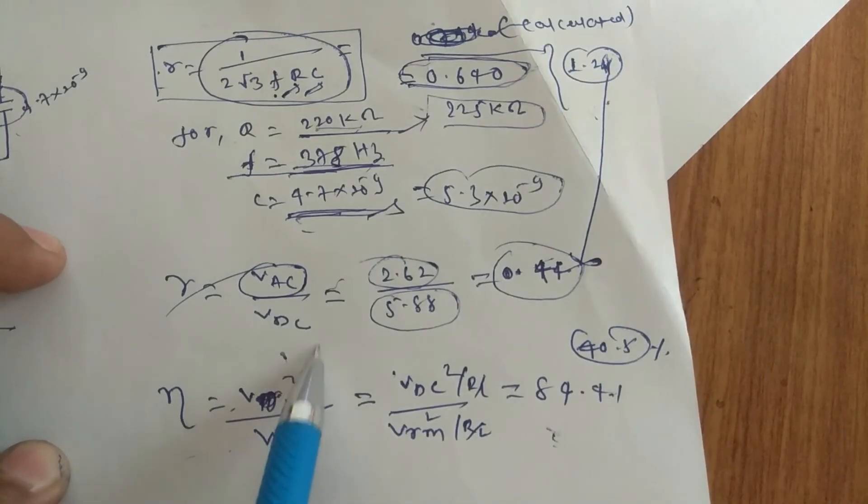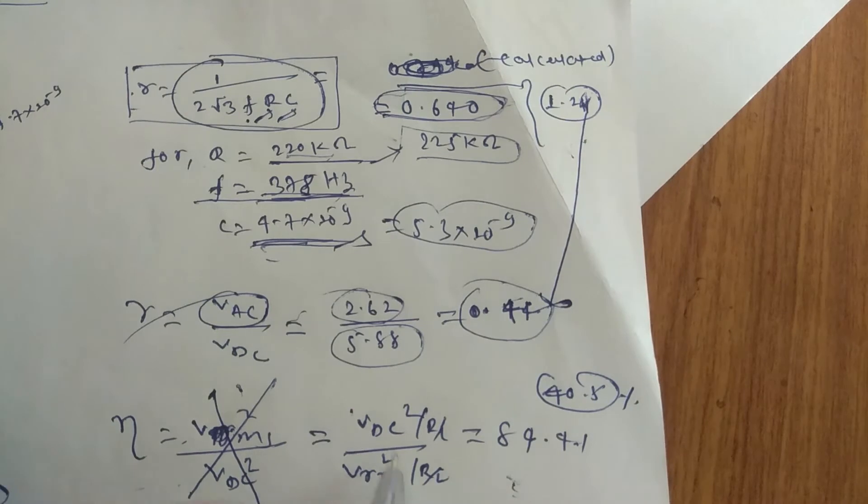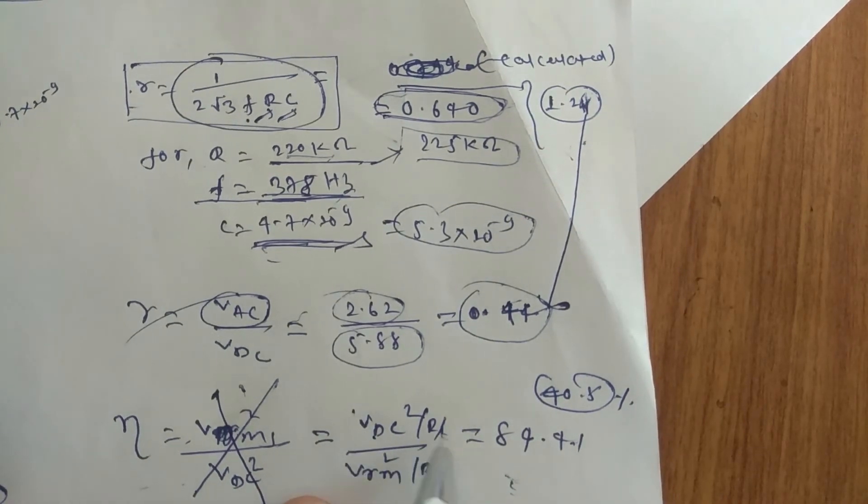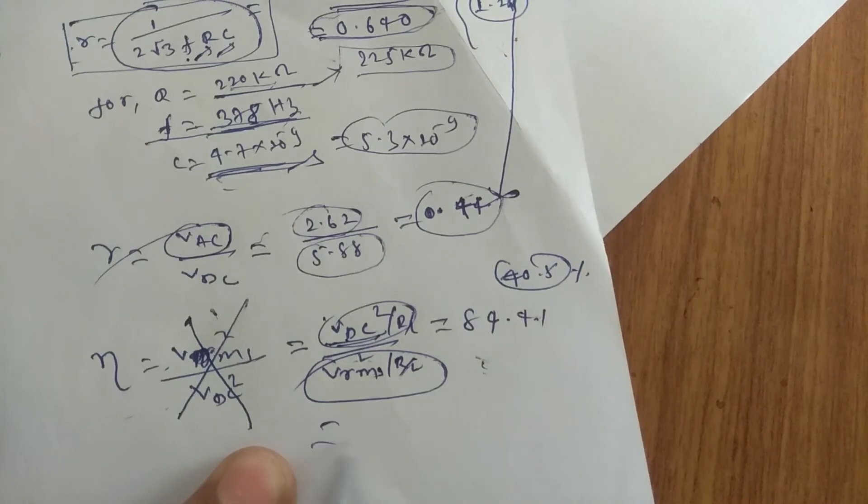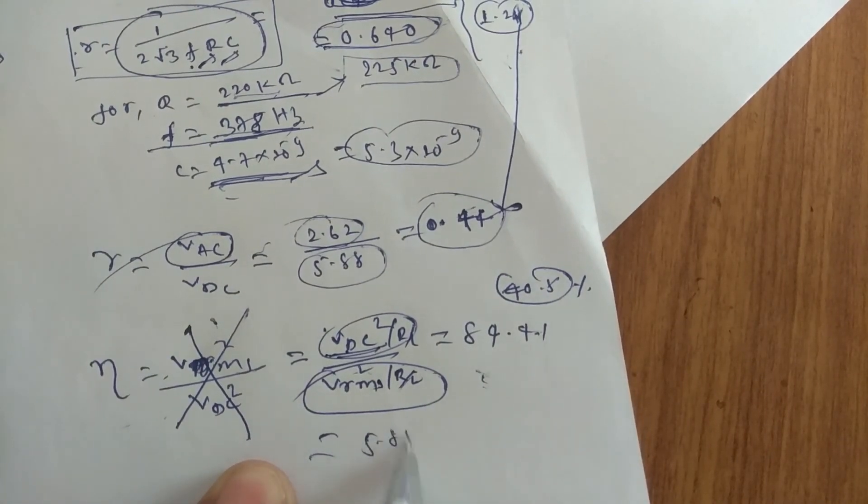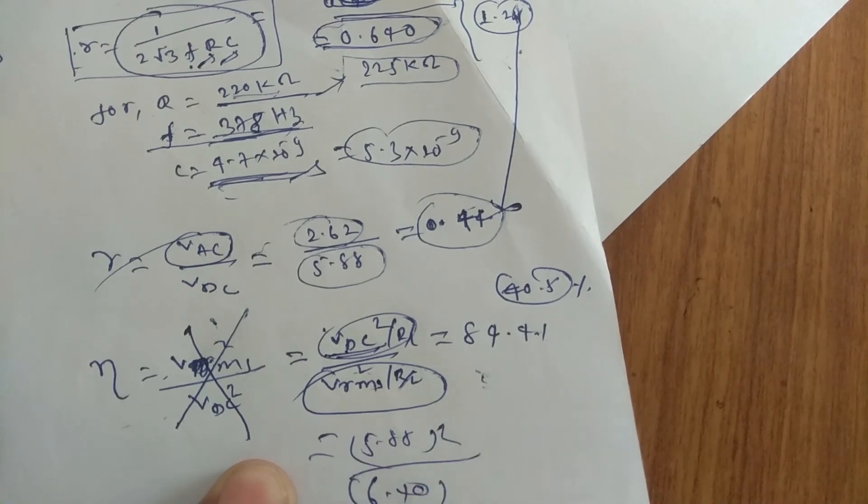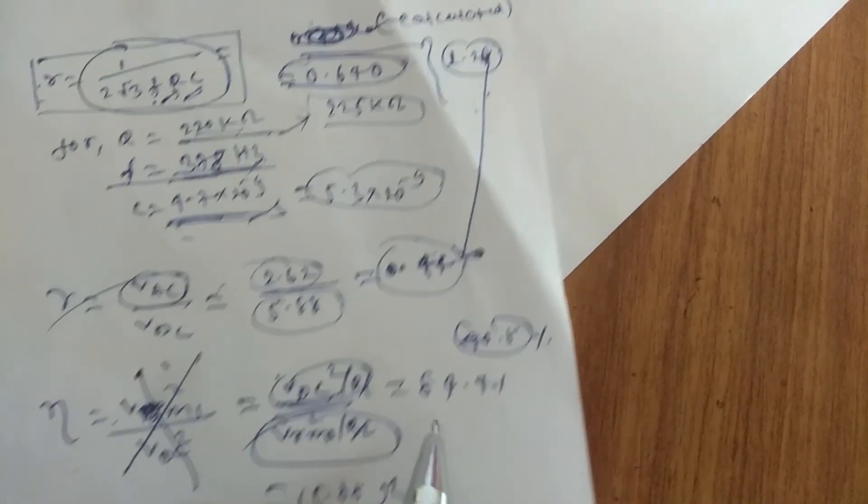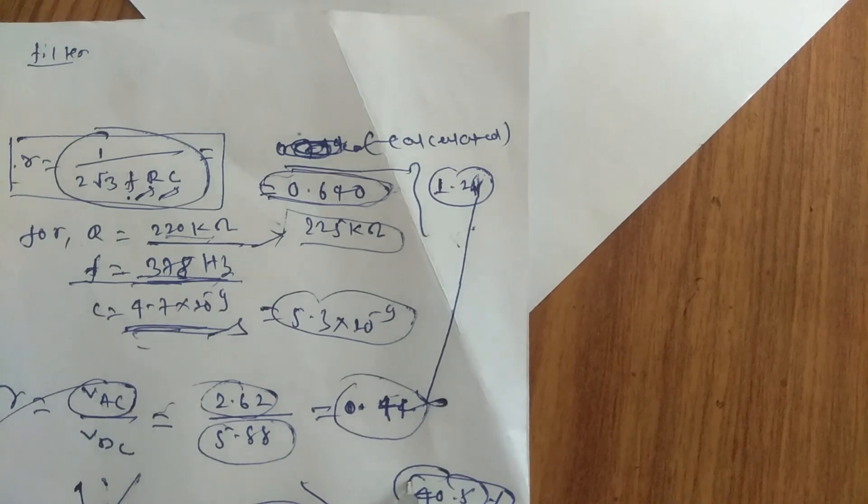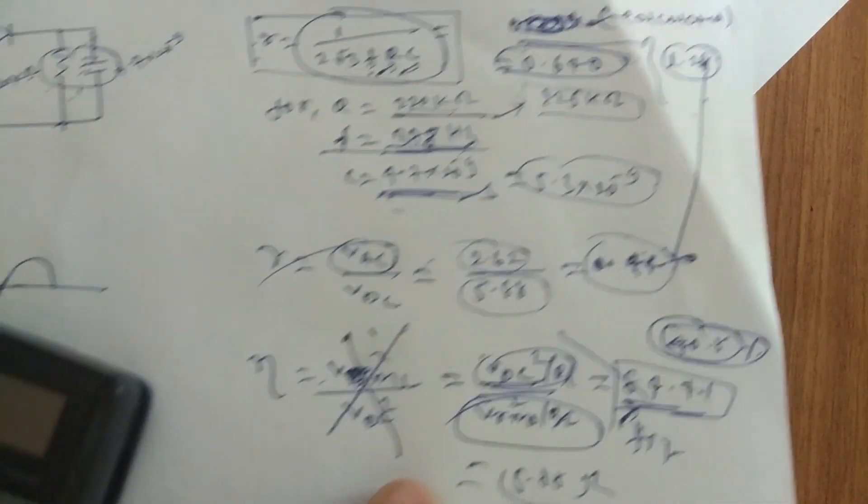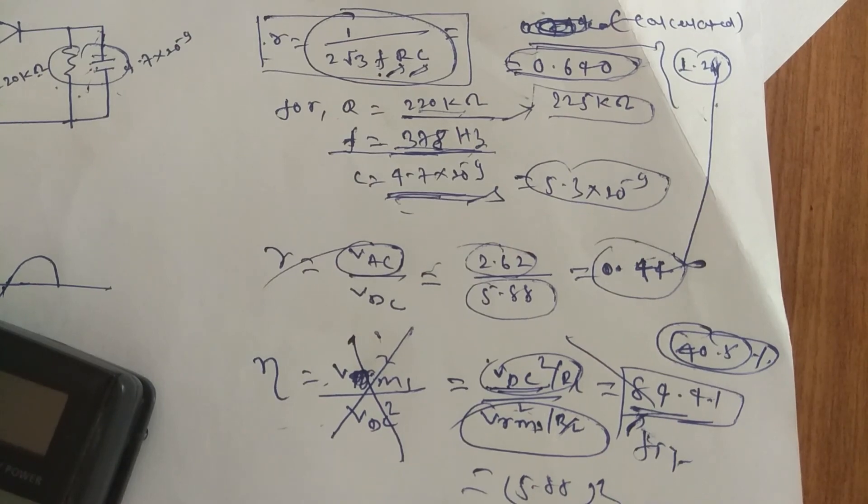If you change the formula that I have written, it was wrong. Vrms by VDC square, it will be VDC that we wanted because of rectification. And what we are getting? Vrms by RL, Vrms square by RL. If you do VDC by Vrms square, VDC we got it around 5.88 square divided by 6.40 square, this is the Vrms we got, we are getting a 84.4% efficiency, that is because of filter. Theoretically it was 40.5% without filter. This is all about the half wave rectifier with filter.